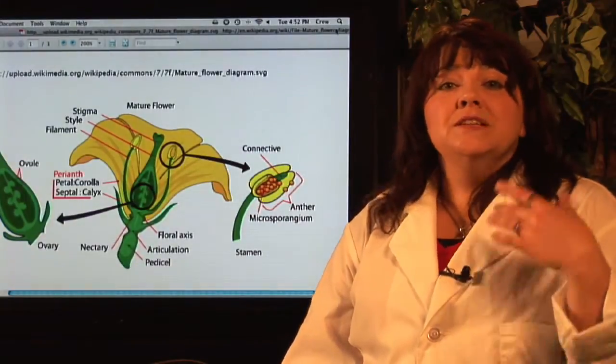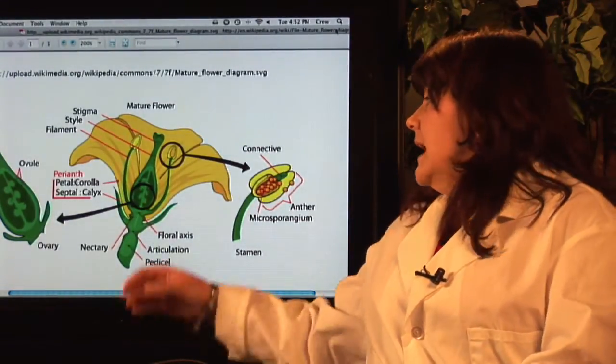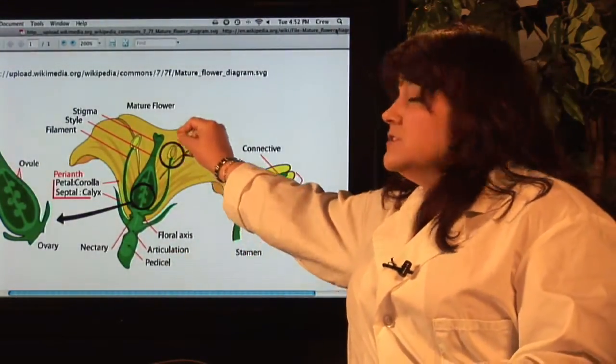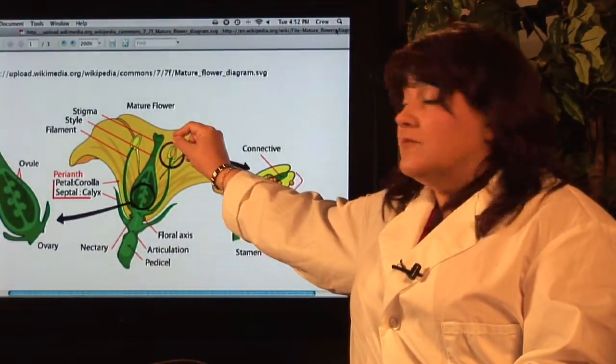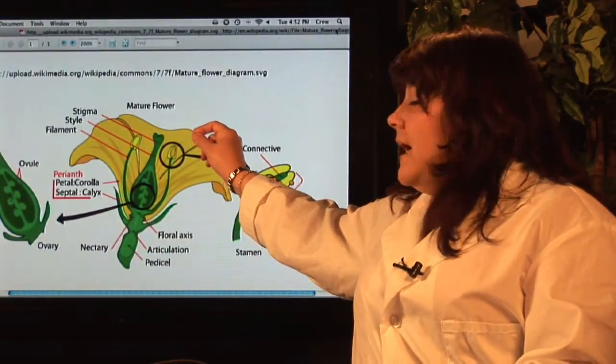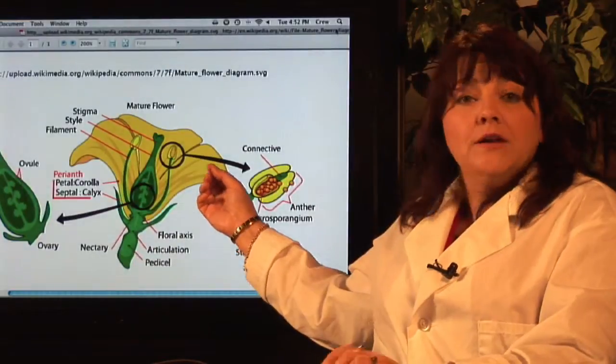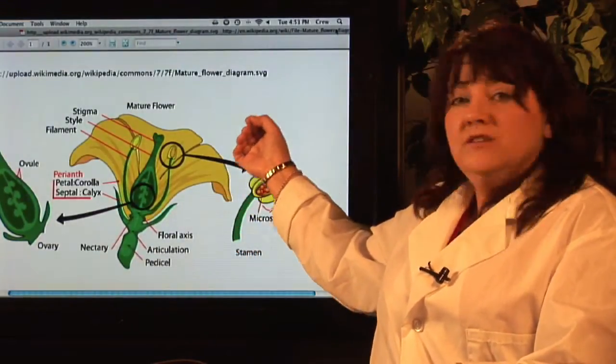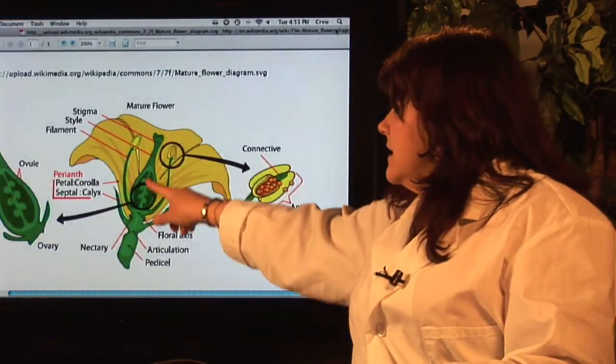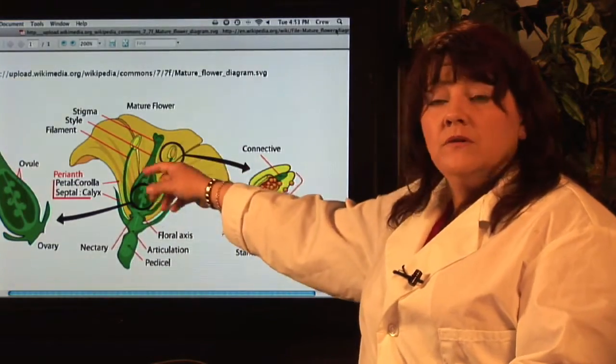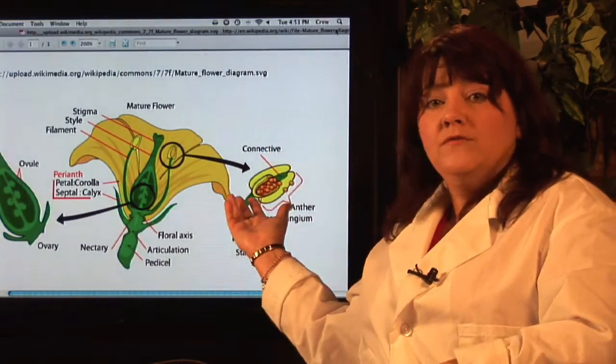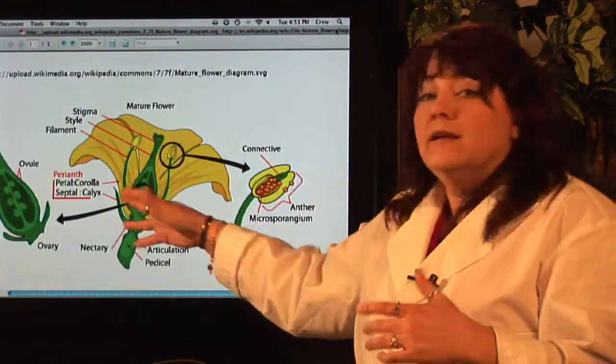Well you can actually intentionally combine plant DNA by taking a Q-tip, swabbing it on this part of the flower to pick up some pollen, and then go to another flower on a different plant and take that pollen and rub it into this part right here, into the sepal, and get the pollen from one flower into the ovary of another flower.